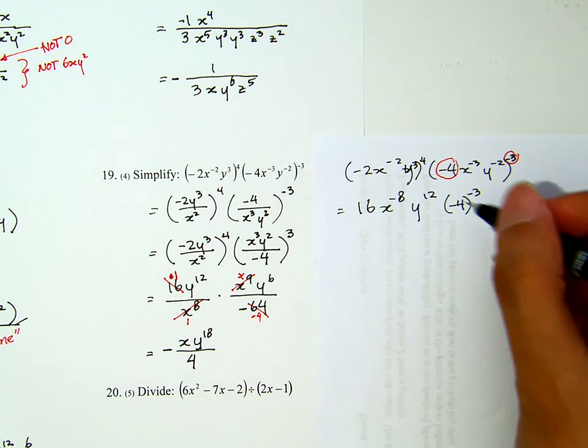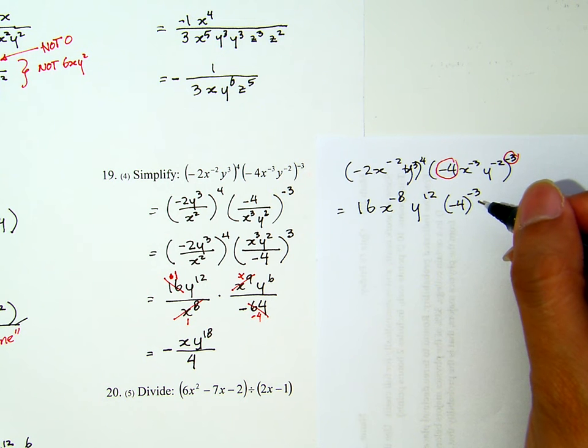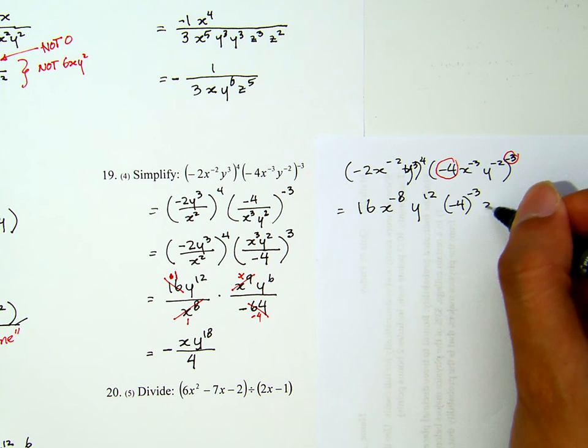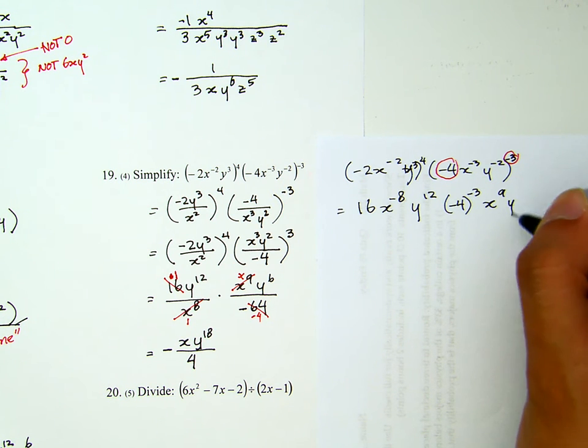That is negative 4 to the power of negative 3. Why I do it this way? Because of the negative exponent later on? This will not be negative 64. This will later on will be 1 over negative 64. Now, let me continue with the x and the y. This is x to the 9th, y to the 6th.